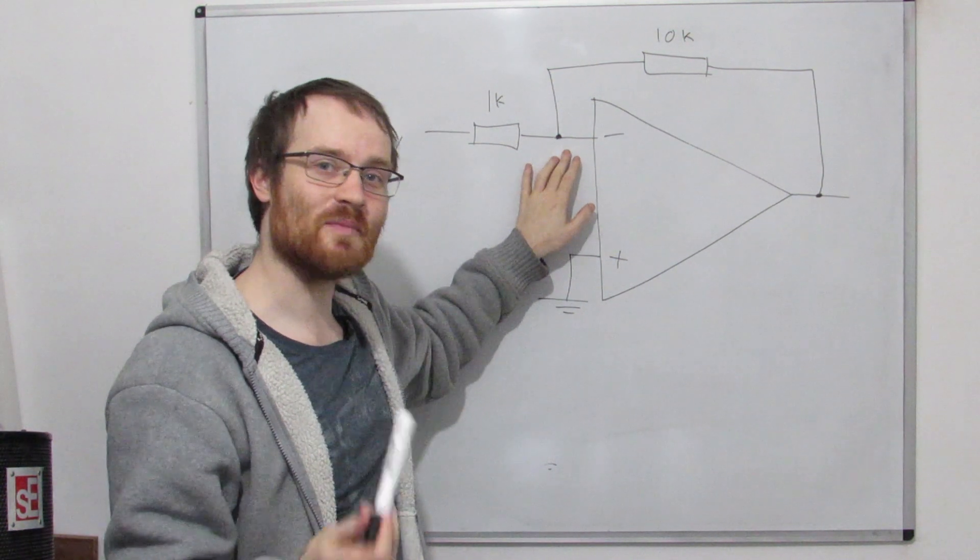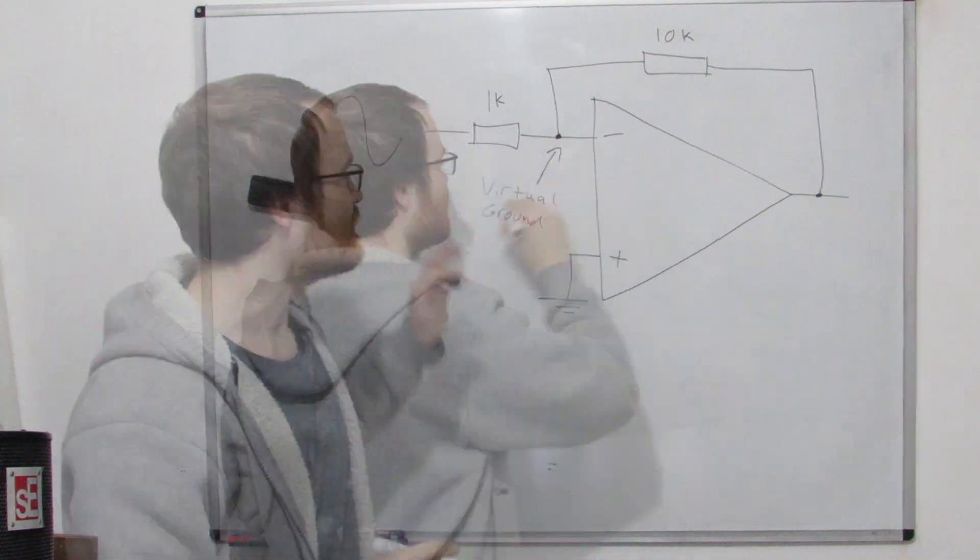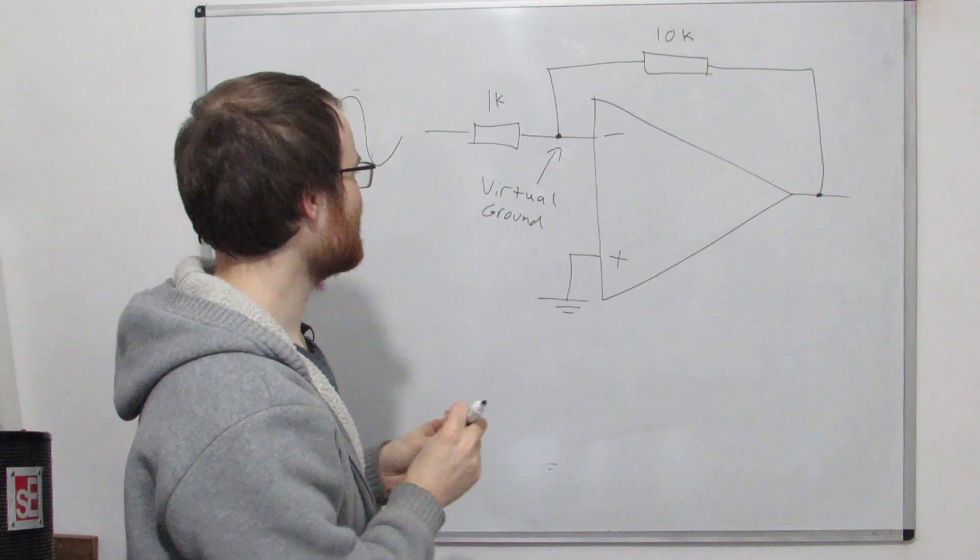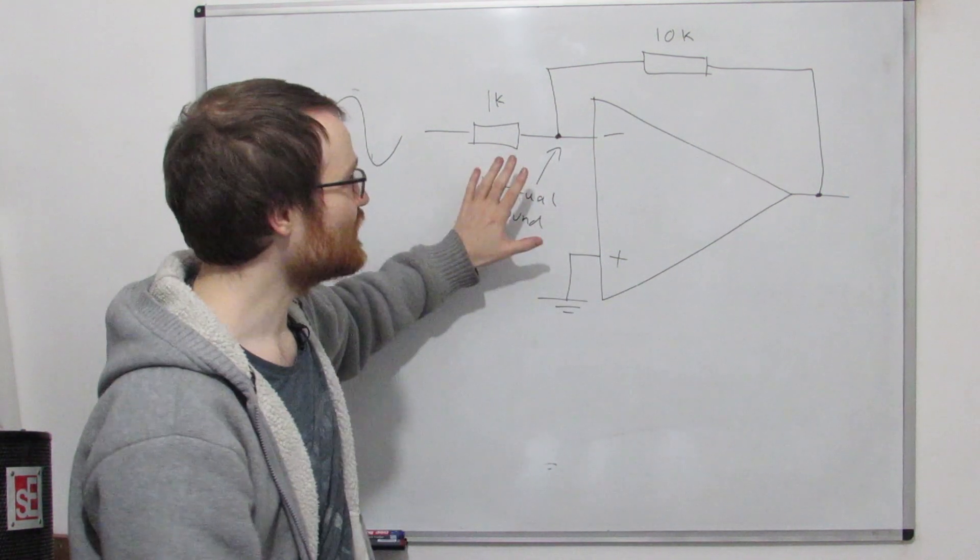This is a really special part of op-amp analysis, which is that this point is now called virtual ground, which means that this point will act for all intents and purposes like a second ground.